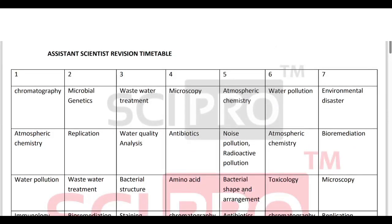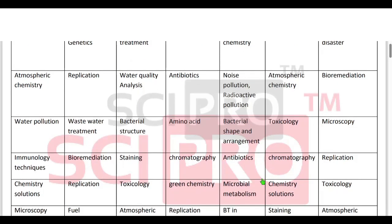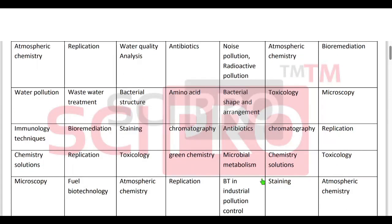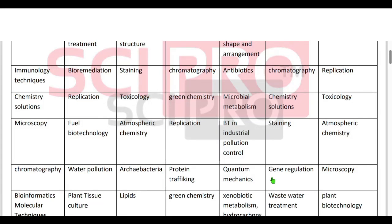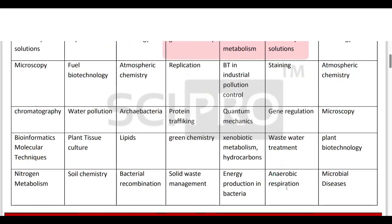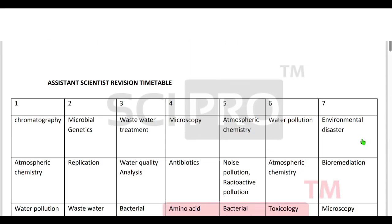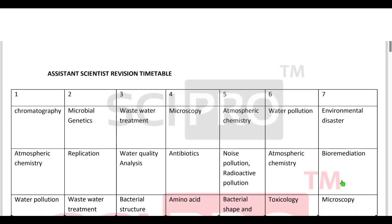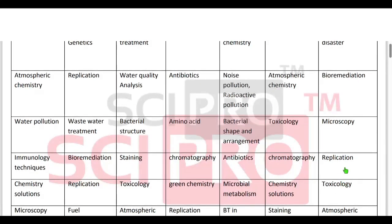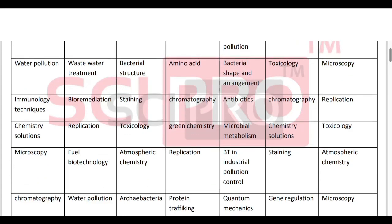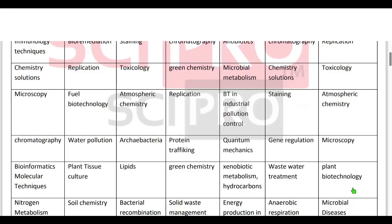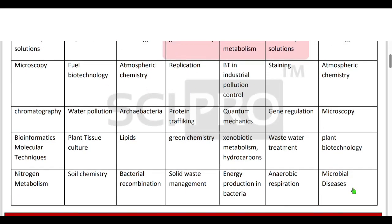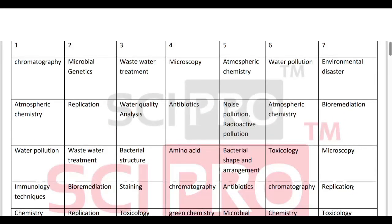Day 6 is water pollution, atmospheric chemistry, toxicology, chromatography, chemistry solutions and problems. Staining, gene regulation, wastewater treatment, anaerobic respiration. Bioremediation, microscopy, replication, toxicology, atmospheric chemistry, microscopy, plant biotechnology. This is the 7-day timetable — days 1, 2, 3, 4, 5, 6, 7. You can learn it as well.